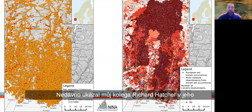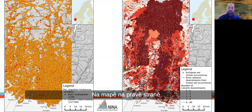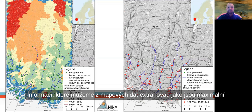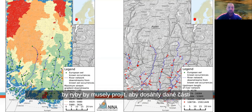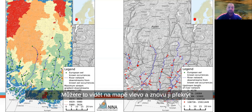My colleague Richard Hatcher showed in a recent study that the number of culverts downstream significantly contributes to explaining the prevalence of migratory sea trout in electrofishing sites. On the map on the right you also see overlaid known occurrences of European eel and the river sections downstream from them. Another layer of information we can extract is the maximum slope or gradient in the river network a fish would have to pass to reach a given section, which you can see in the map on the left, overlaid with known occurrences of European eel.